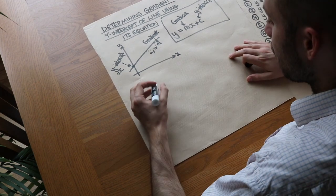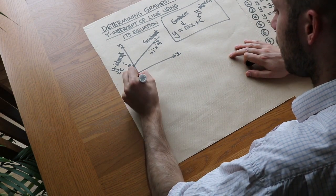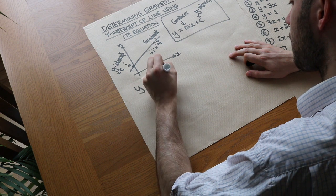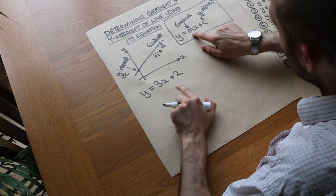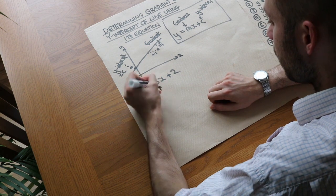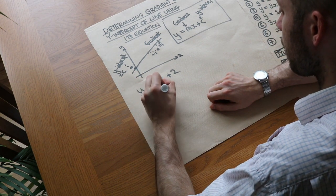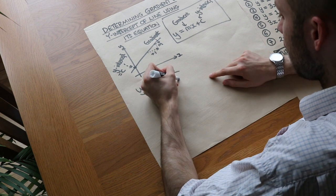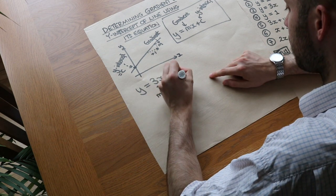Just to give you an example: if I had y is equal to 3x plus 2, then m is the number in front of the x. So that is the gradient — the gradient is 3, m is 3. And the y-intercept is that plus thing after, which is 2. So the y-intercept is 2.